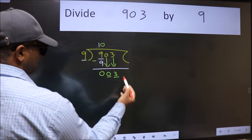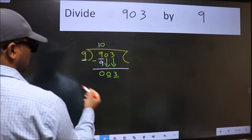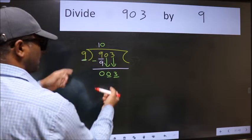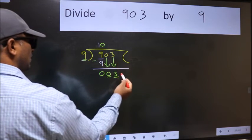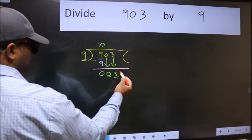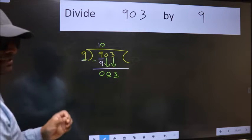Here we have 3 and here 9. 3 is smaller than 9. So what many do is they directly put dot take 0. Which is wrong.